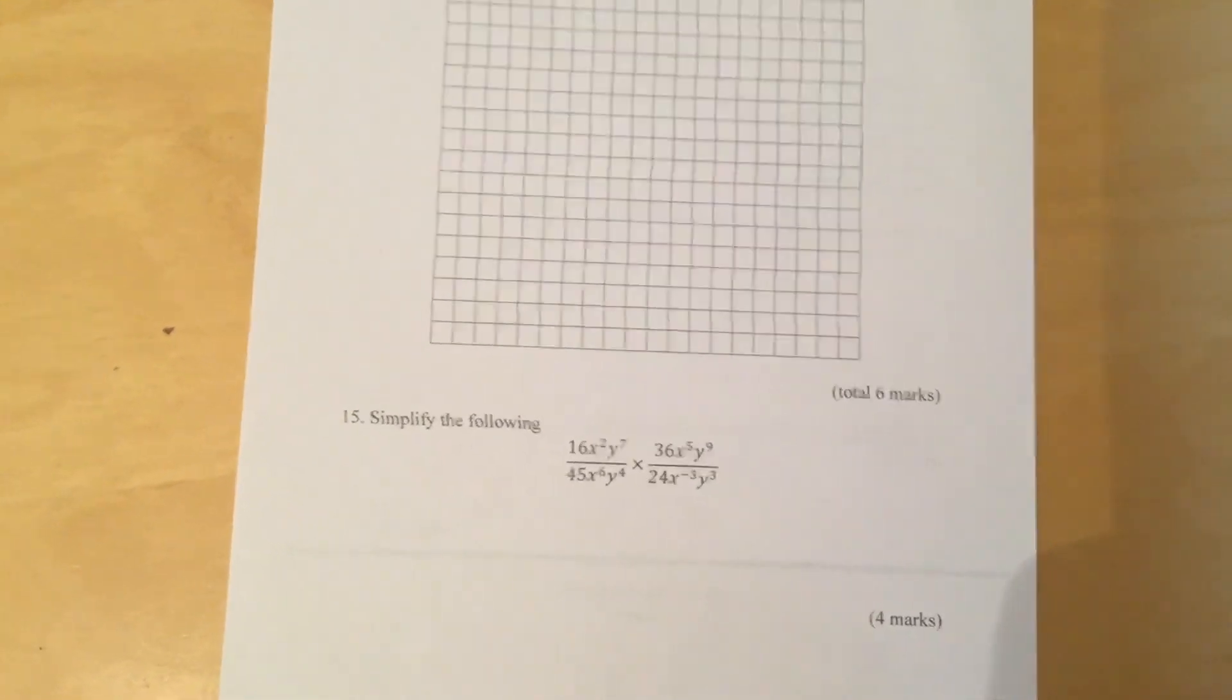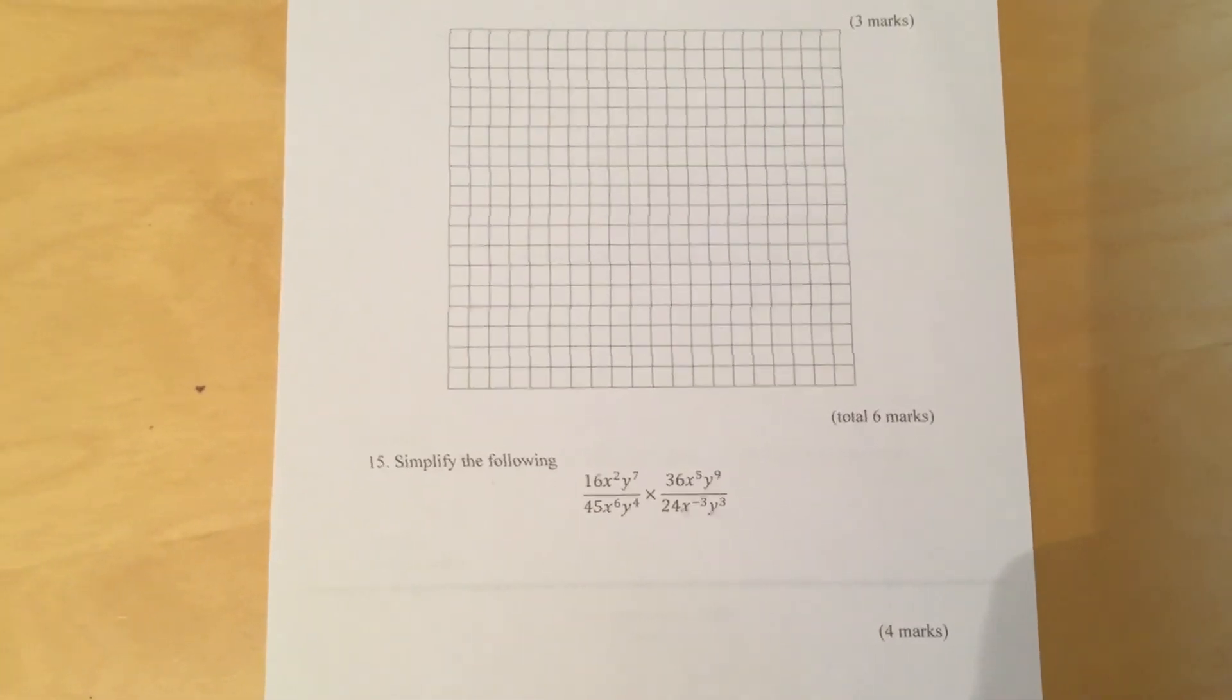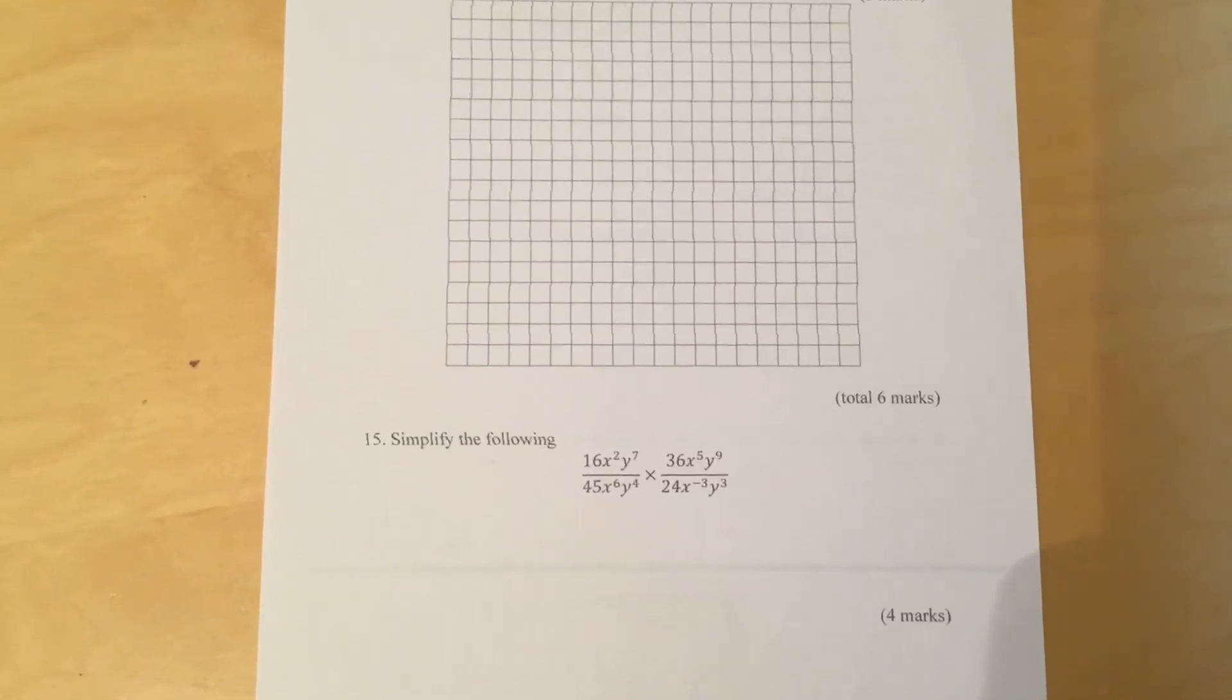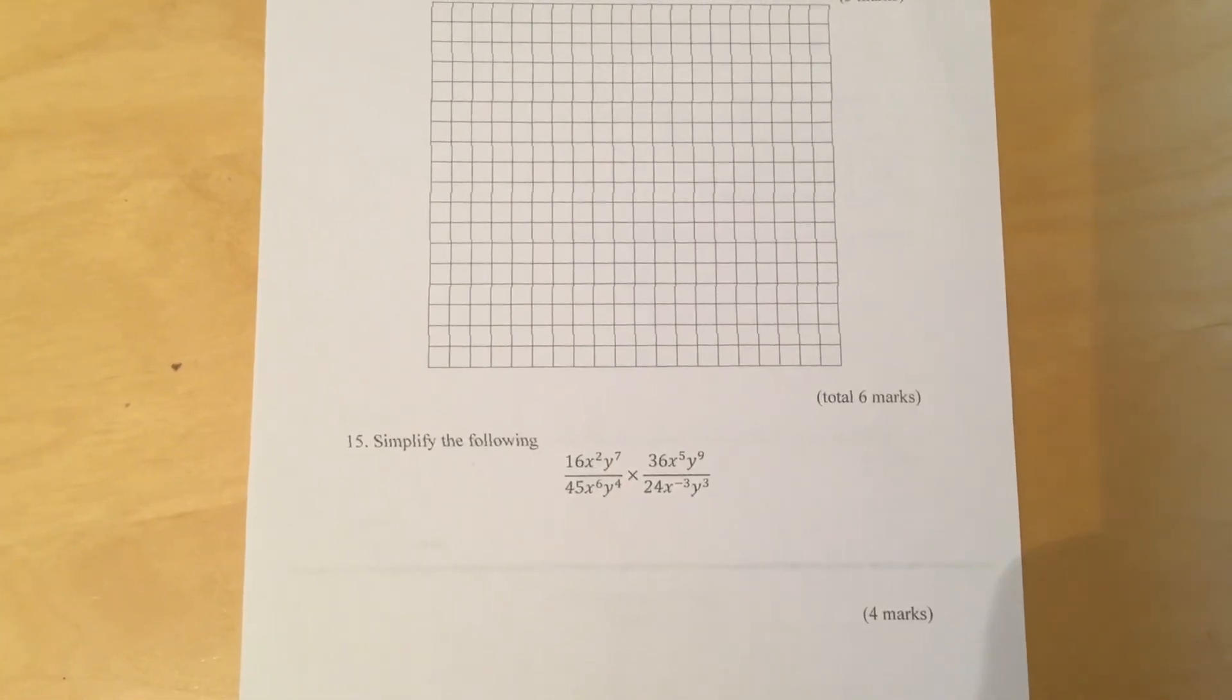Question 15. Simplify the following. 16x squared Y to the 7 over 45 X to the 6 Y to the 4 times 36 X to the 5 Y to the 9 over 24 X to the minus 3 Y to the 3.